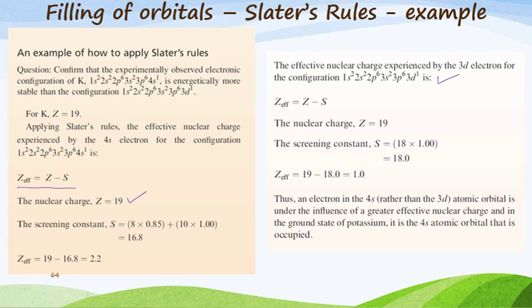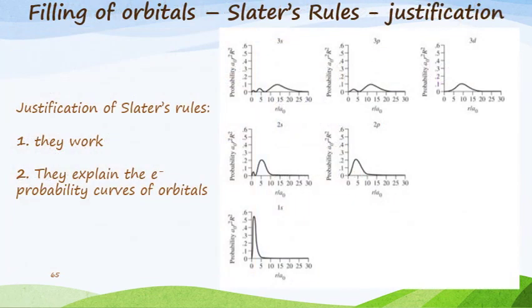Therefore an electron in the 4s orbital rather than the 3d is under the influence of a greater effective nuclear charge. In the ground state of potassium it's the 4s atomic orbital that is occupied preferentially to the 3d orbital. We can use Slater's rules to justify that they work and that they also explain the electron probability curves of the different orbitals.